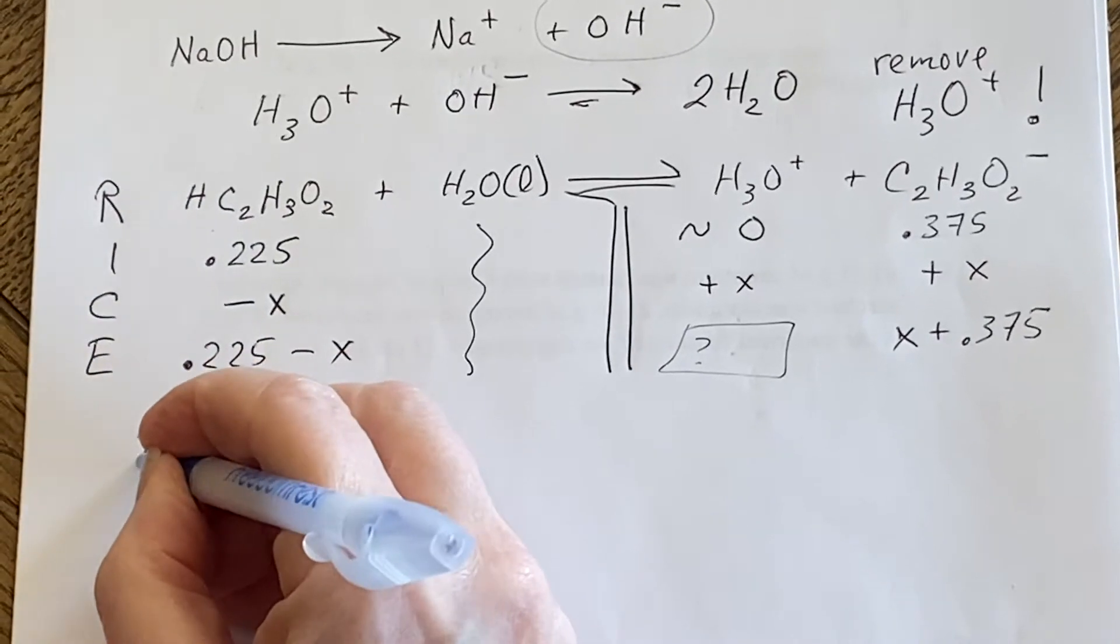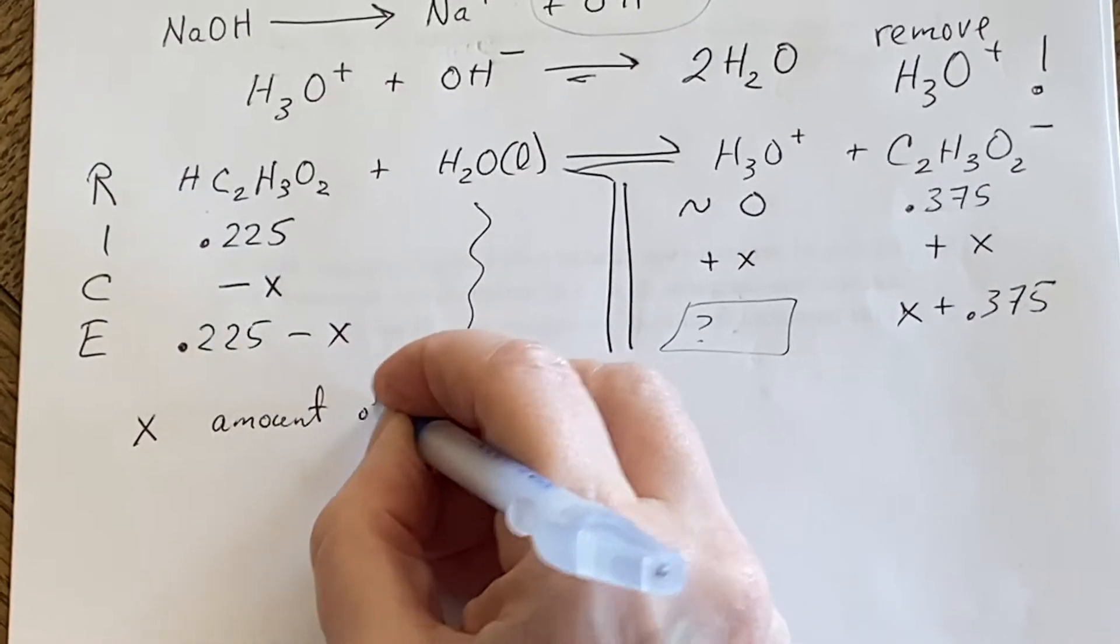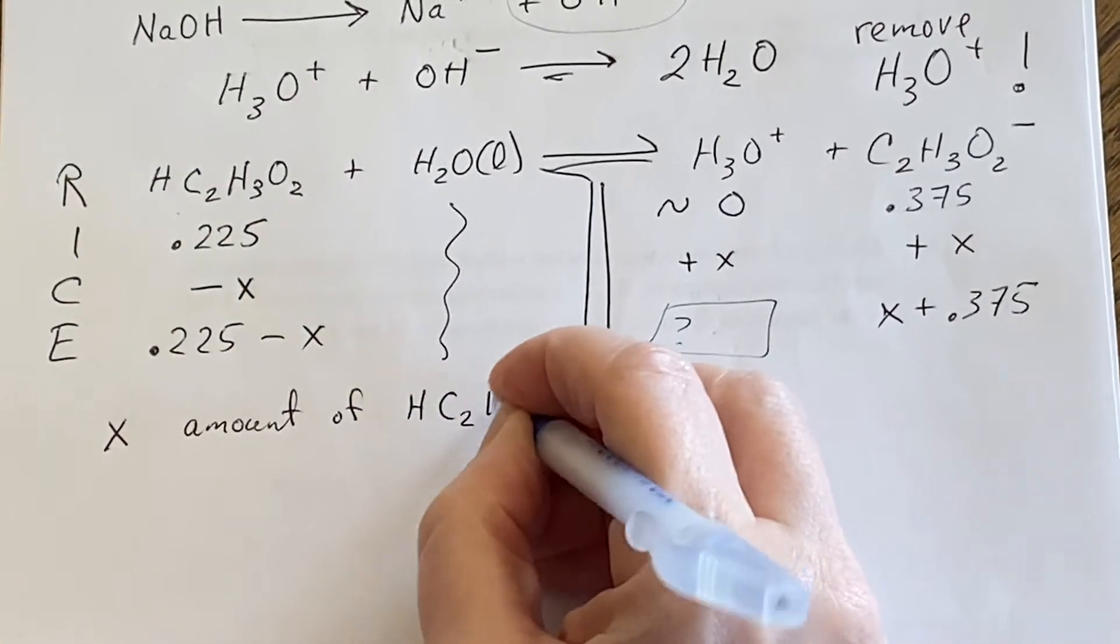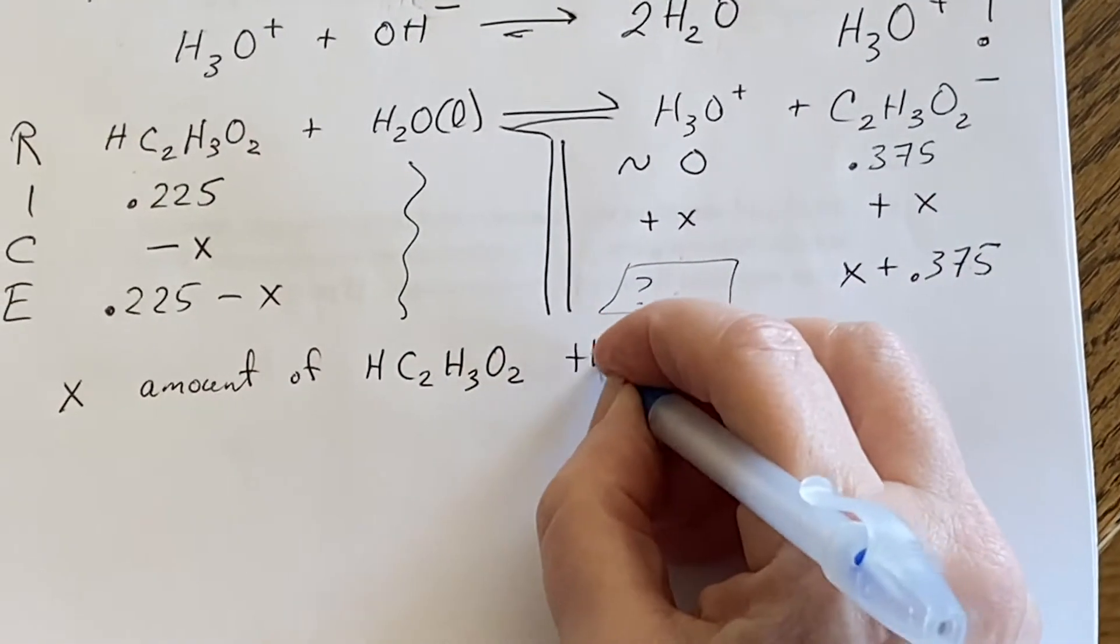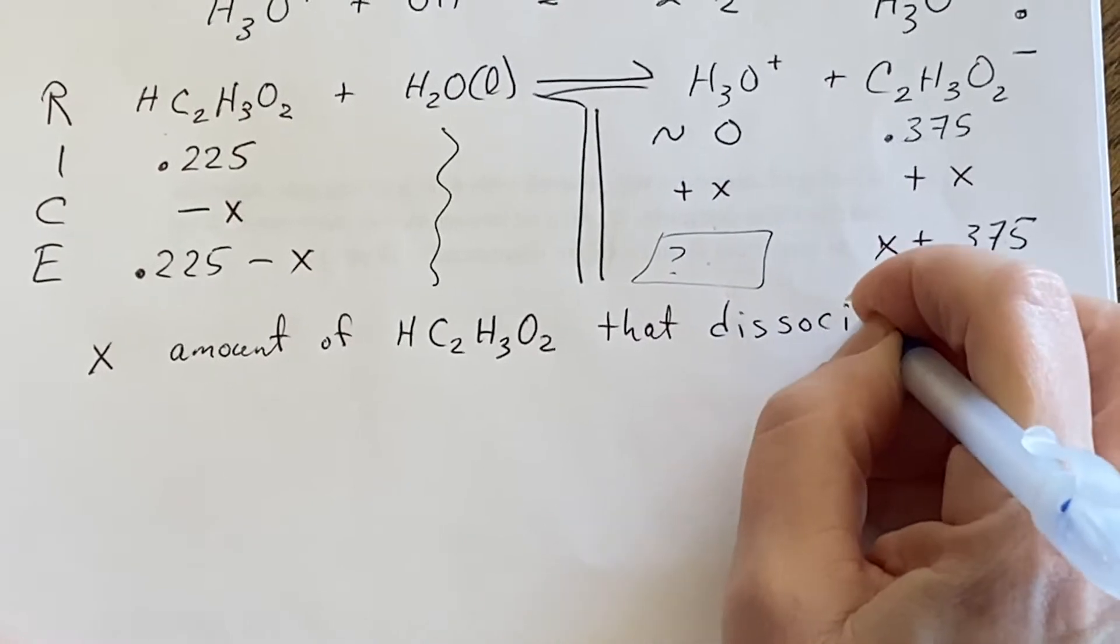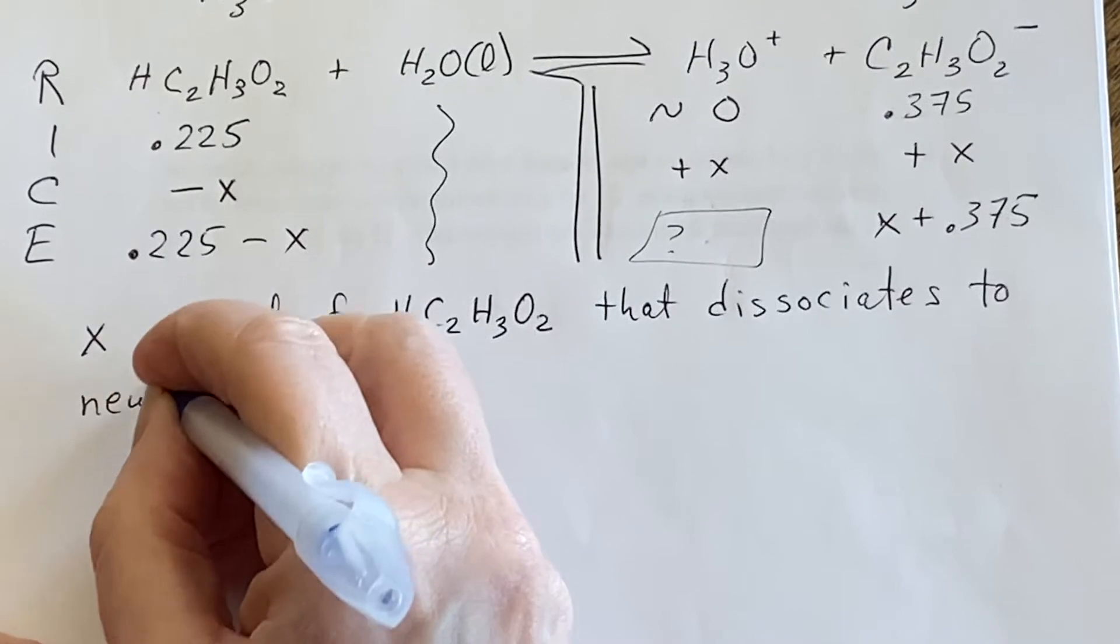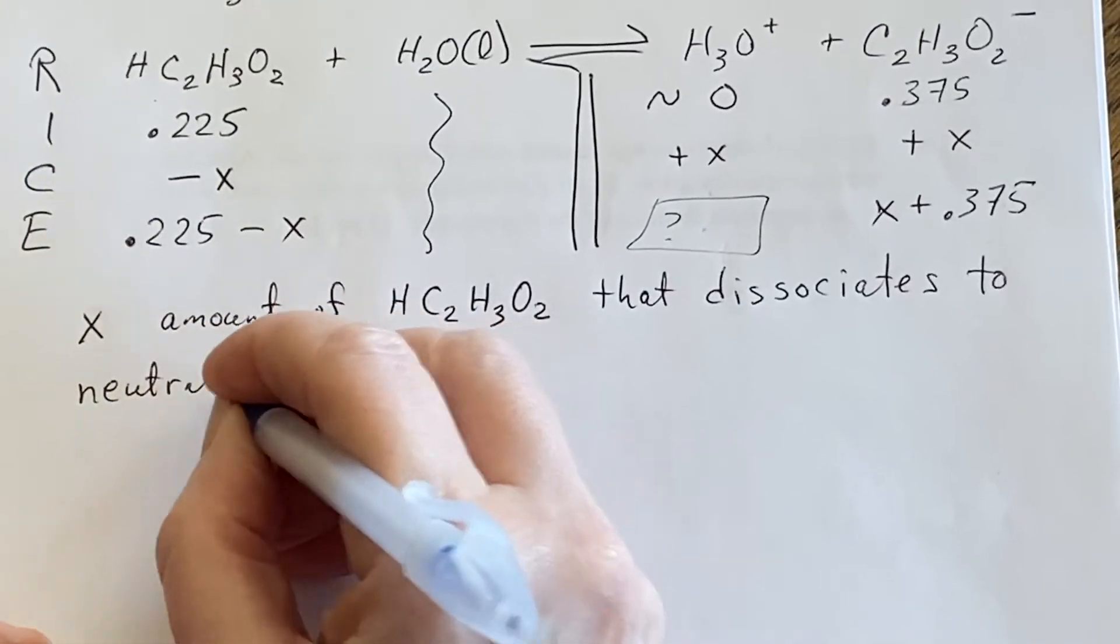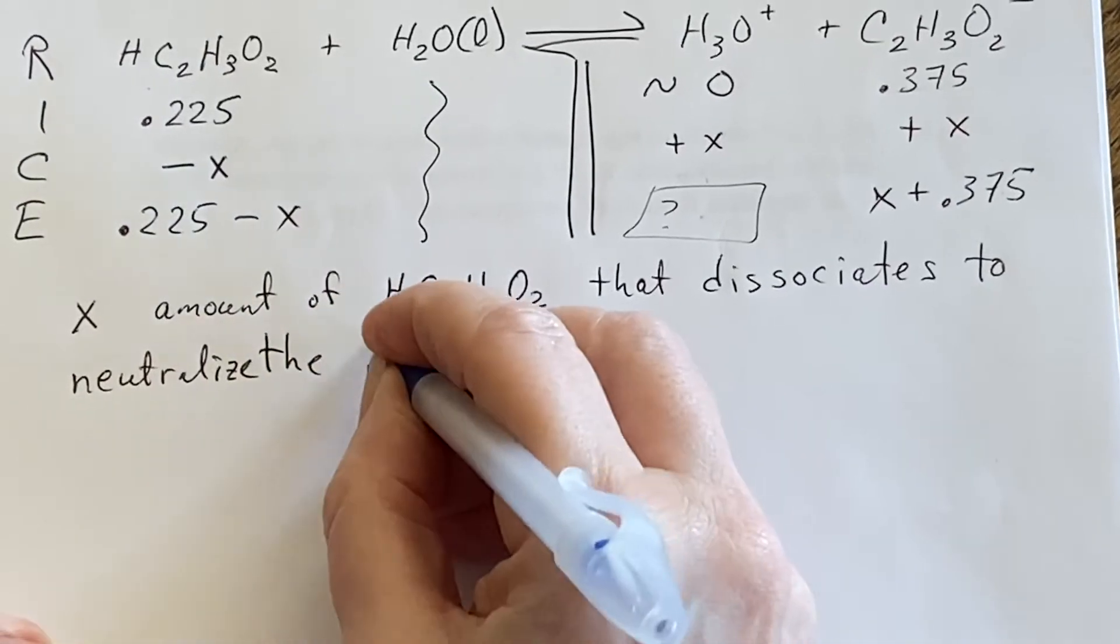So x has to be the amount of acetic acid that dissociates to neutralize the NaOH.